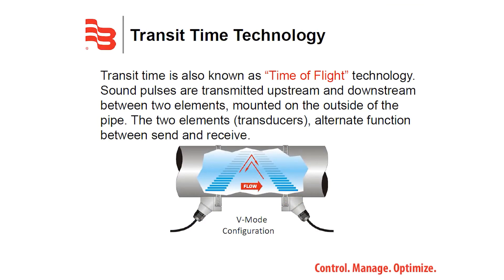Ultrasonic sound is sent using pulses in both directions of flow. A popular analogy is to think of a canoeist going from one side of the river to the other — as he goes with the current, he gets to the other side much quicker than on the return path. Ultrasound does the exact same thing. What is being measured is the time it takes for sound transmission in both directions; that differential in time tells us the velocity of the flow.